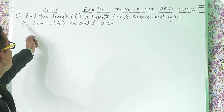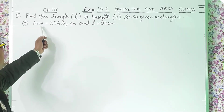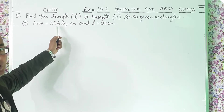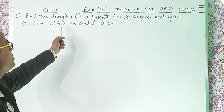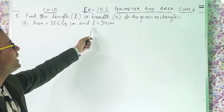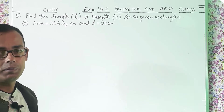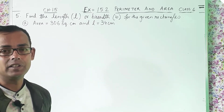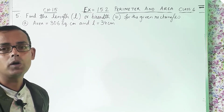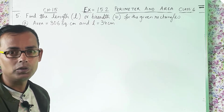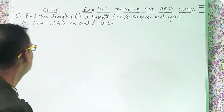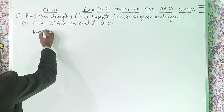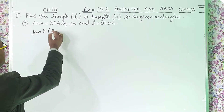For number 5A, area is equal to 306 square centimeters and L is equal to 34 centimeters. That means length is given and area is given, so what is left? Breadth. We have to find out the breadth. So let's start answer 5A.